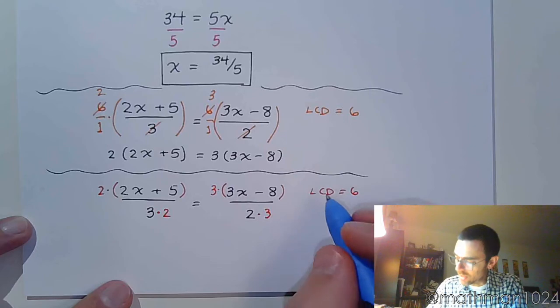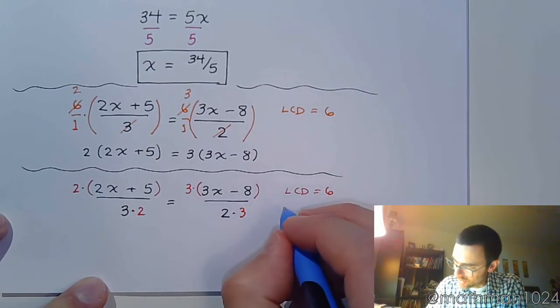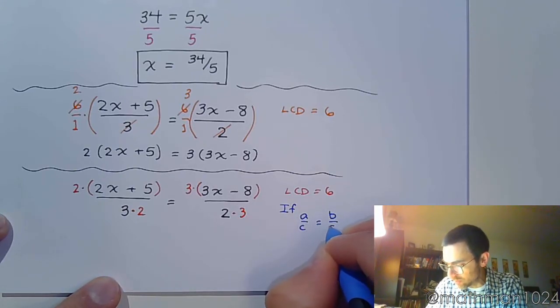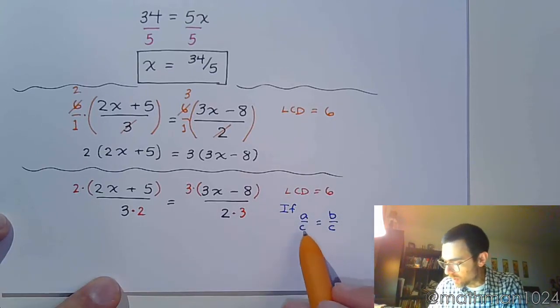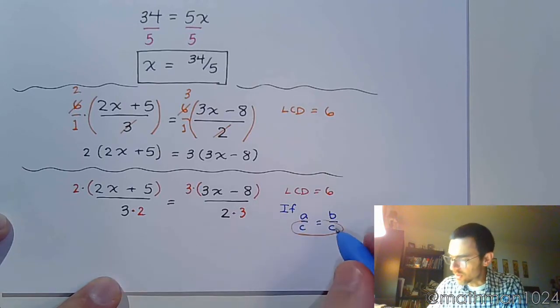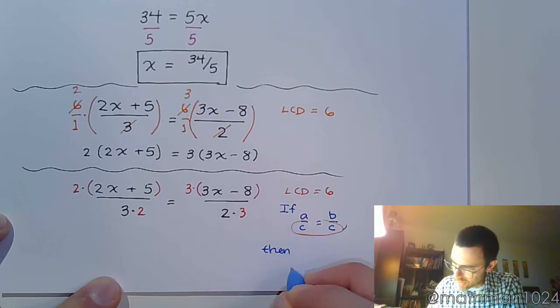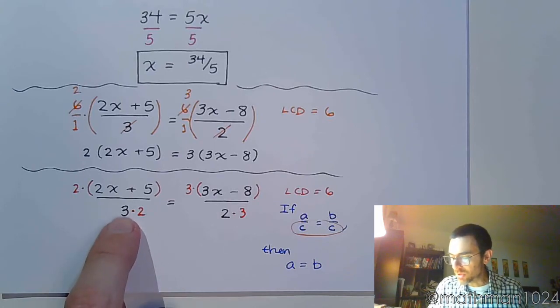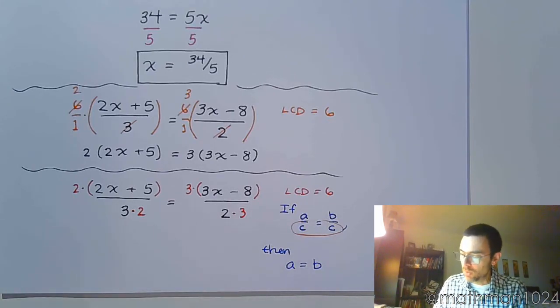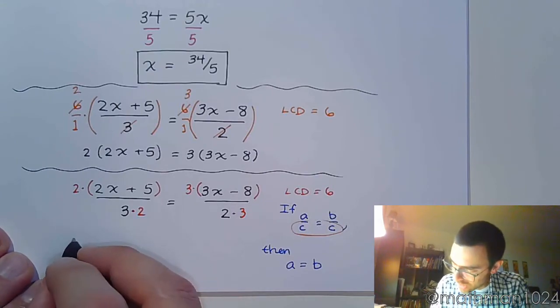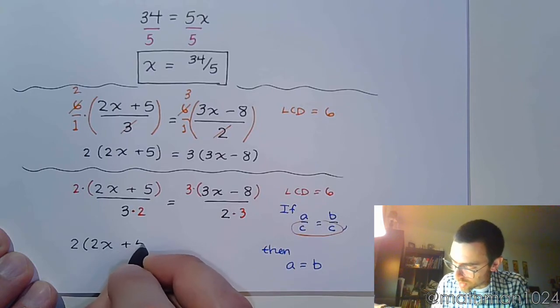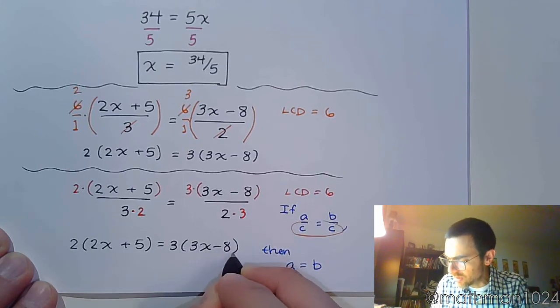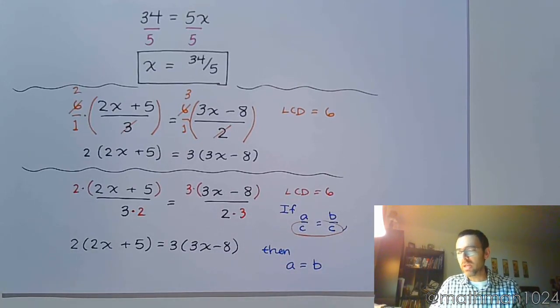Now, the big idea about all of this is this following statement. It says, if you have two fractions that are equal and they have the same denominator, as long as those denominators are the same, then what you can do is that you can equate the numerators and turn that into your equation. So, 3 times 2 and 2 times 3 both equal 6, which means I can ignore those guys and rewrite this and form my equation from what I have in my numerators.